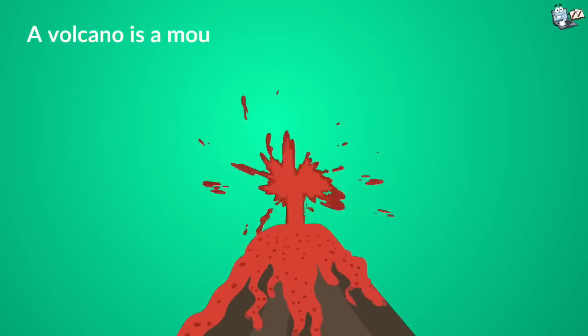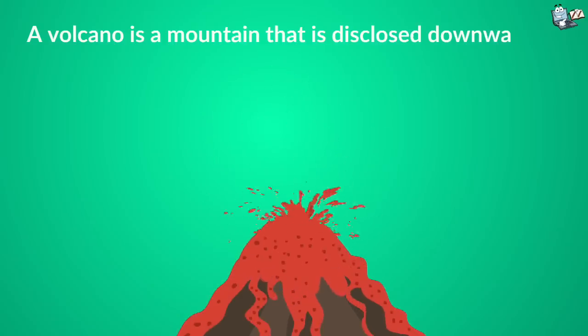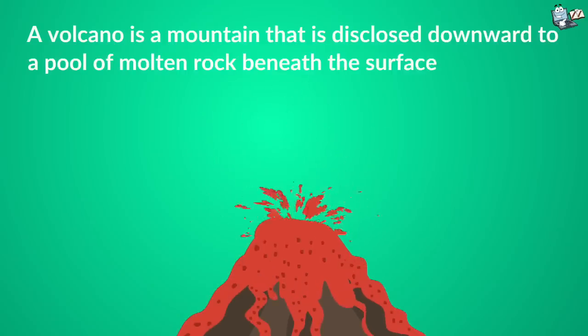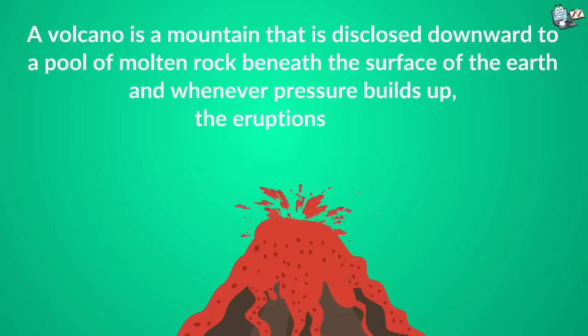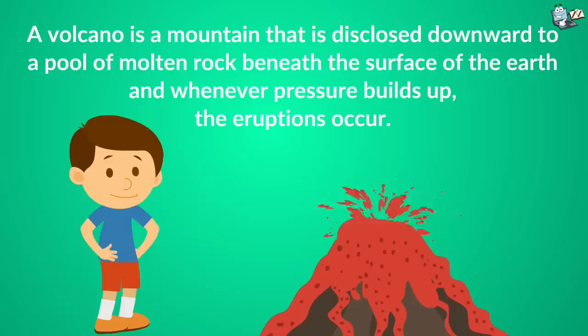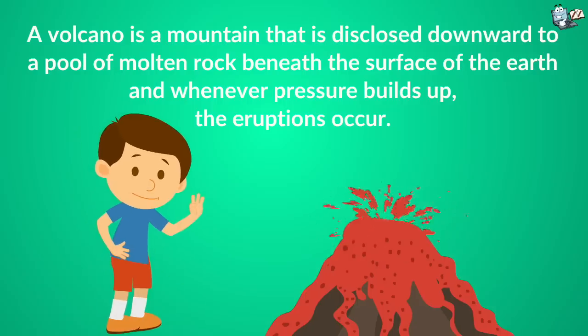A volcano is a mountain that is disclosed downward to a pool of molten rock beneath the surface of the Earth. And whenever pressure builds up, eruptions occur. However, there are three different types of volcanoes.